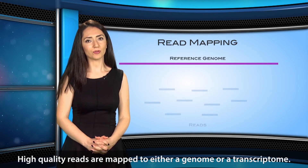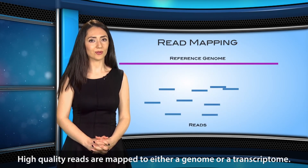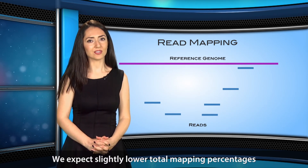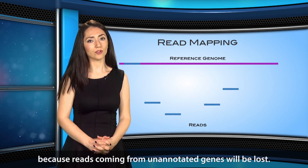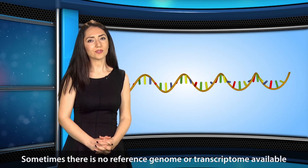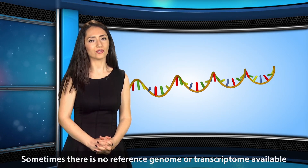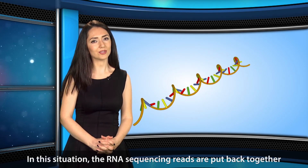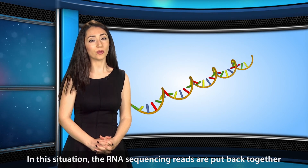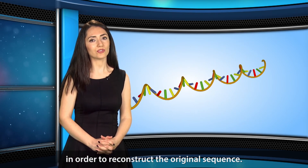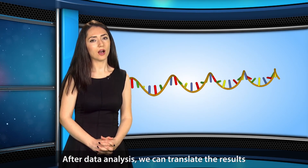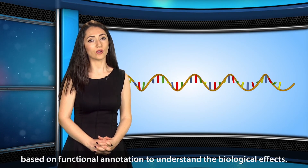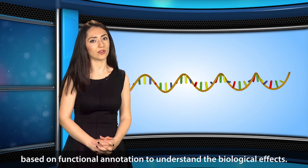High-quality reads are mapped to either a genome or a transcriptome. We expect slightly lower total mapping percentages because reads coming from unannotated genes will be lost. Sometimes there is no reference genome or transcriptome available for the species we are studying. In this situation, the RNA sequencing reads are put back together in order to reconstruct the original sequence. After data analysis, we can translate the results based on functional annotation to understand the biological effects.